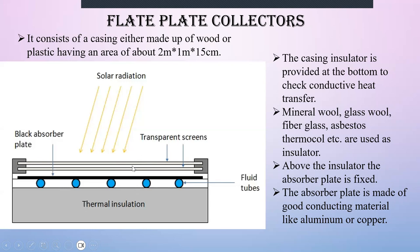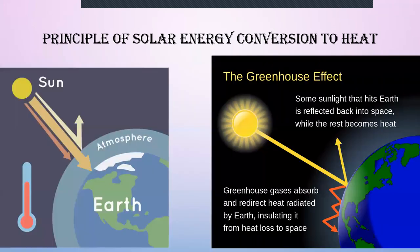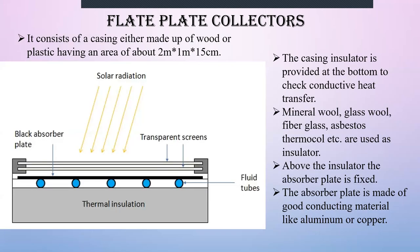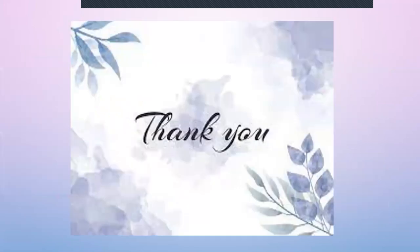Above the absorber plate, transparent glass covers are provided. These glass covers help bring about the greenhouse effect so that the complete efficiency of the collector is increased. This is what the flat plate collector means — with it, you can prevent the loss of radiation by reflection. If you have understood the complete construction of the flat plate collector, how solar energy is converted to heat energy, and the basics of solar collectors, please stay tuned for more information. Thank you.